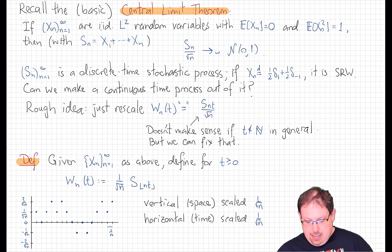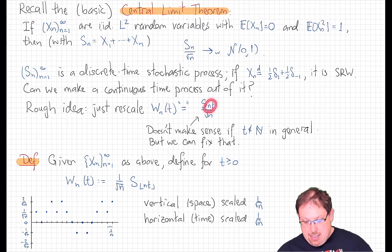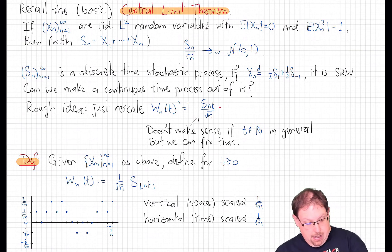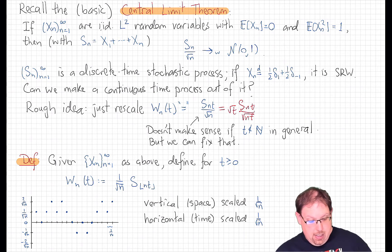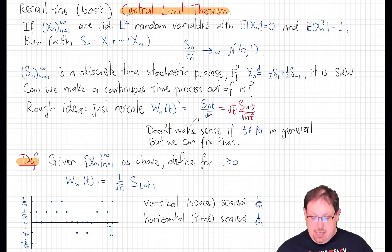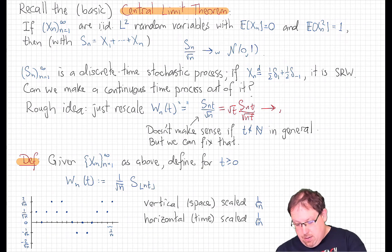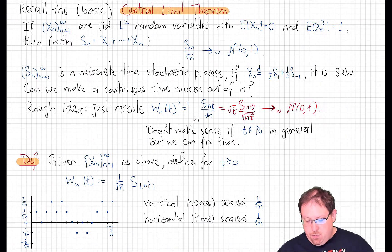Now that doesn't really make sense, because S of blah is only defined when blah is a non-negative integer. But let's ignore that for a moment and note that we could write S_{nt} / √n as S_{nt} / √(nt) with an extra factor of √t out front. Now if t is a fixed positive time, then nt goes to infinity just as n does. So the central limit theorem tells us this still converges to a standard normal, and scaling by √t gives convergence to a normal of variance t. Note that this is the distribution of Brownian motion at time t.